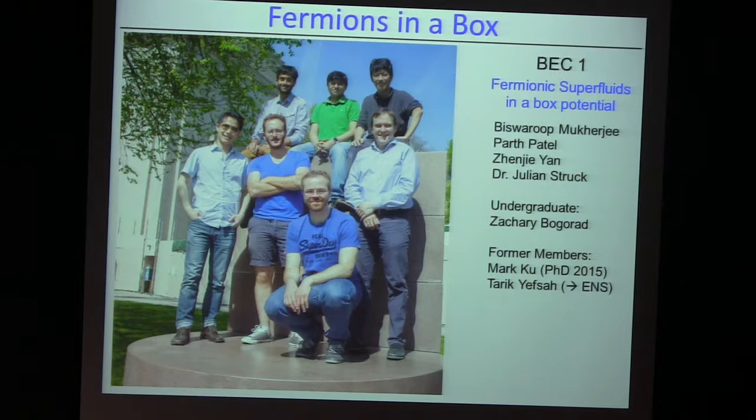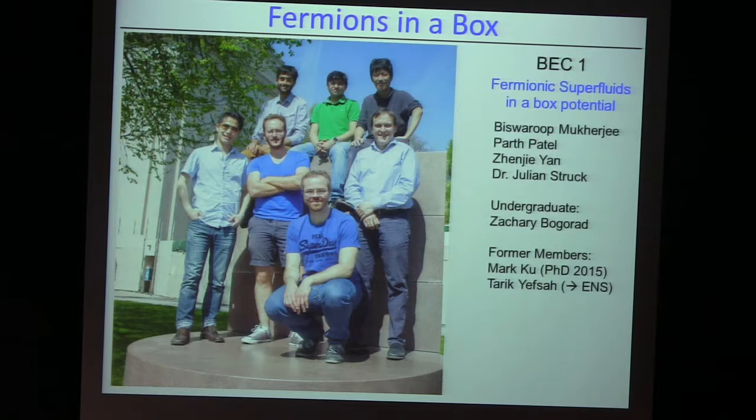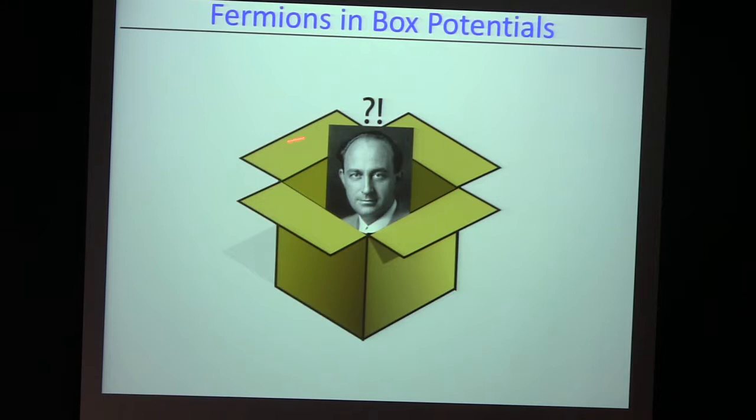I will talk about the new tool in our experiment on fermionic superfluids — namely putting these fermions in a box, in a homogeneous potential — because the theorists will be very happy. No longer this awkward harmonic trap with inhomogeneous potentials. There are also certain states of matter that we will have no chance of seeing if we have inhomogeneous densities. We need to have a fixed density in our trap to hope to see certain states of matter.